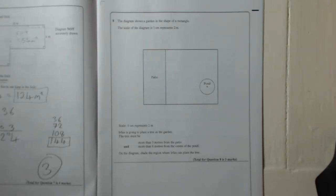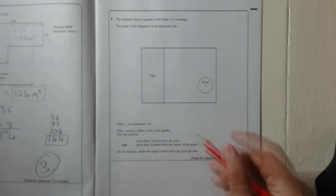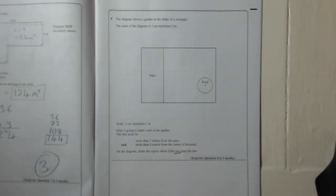Question 8. The diagram shows a garden in the shape of a rectangle. The scale of the diagram is one centimetre represents two metres. Urfan is going to plant a tree in the garden. The tree must be more than three metres from the patio, more than six metres from the centre of the pond. On the diagram, shade the region where Urfan can plant the tree.